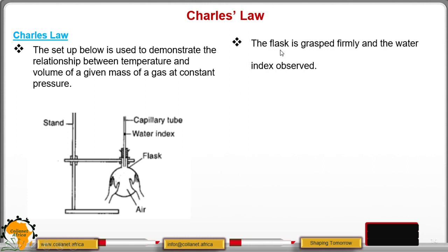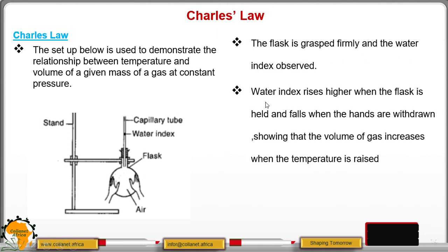So what is happening? The flask is clasped firmly and the water index is observed. When the water index rises, when the flask is held, and falls when the hands are withdrawn. When it is held, it implies that the gas inside is getting warmth from your hands. So the temperature is increasing, and as the temperature is increasing, the gas is rising and forcing the water index to rise.